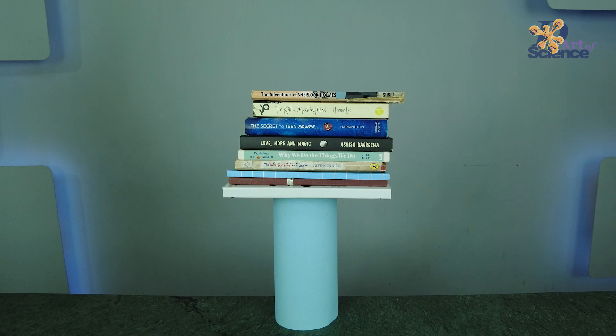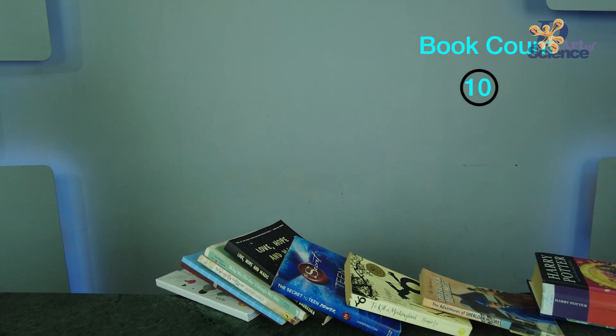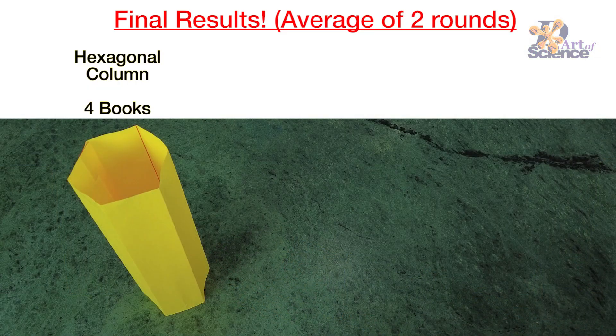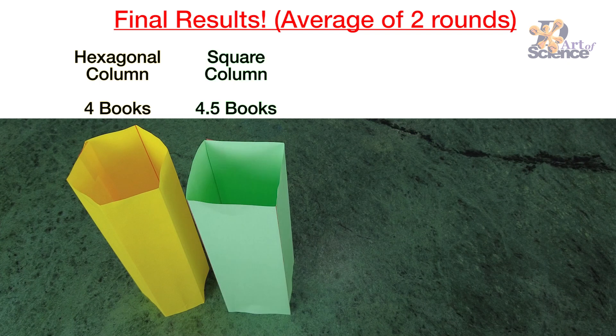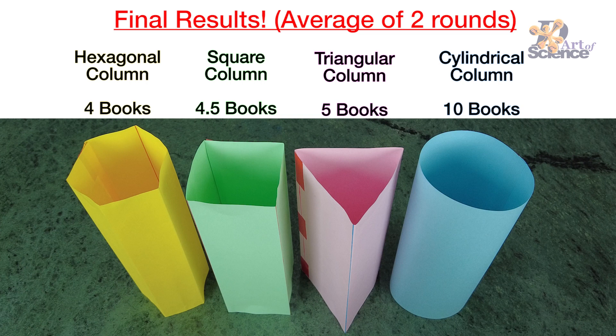Here we see once again that cylindrical column holds the most amount of weight. Therefore, it is the corners of the shape that gives columns their strength. Because if you notice, as we move on to shapes with more corners and folds, the lesser weight it can take.